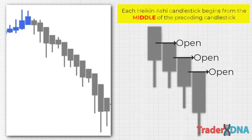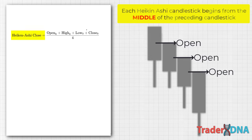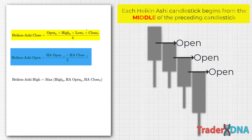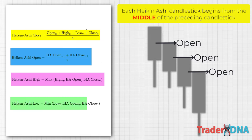Here's the calculation. First, Heikin Ashi close equals the average of open, high, low, close. Second, Heikin Ashi open equals the midpoint of the previous Heikin Ashi bar. Third, Heikin Ashi high equals the highest of high, HA close, and Heikin Ashi open. Fourth, Heikin Ashi low equals the lowest of low, HA close, and Heikin Ashi open. However, it's unnecessary to memorize this formula. The primary purpose of this calculation is to assist in identifying market trends more effectively.